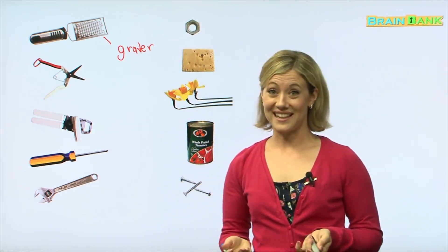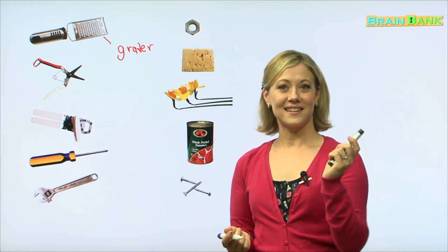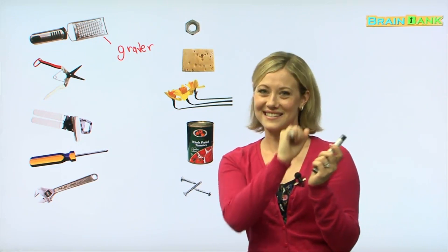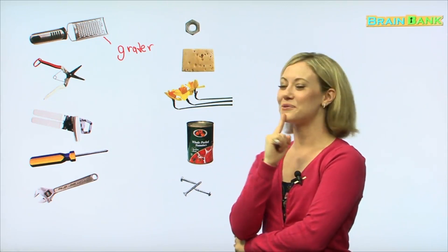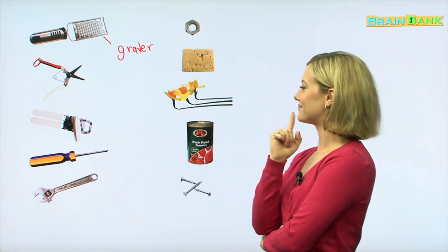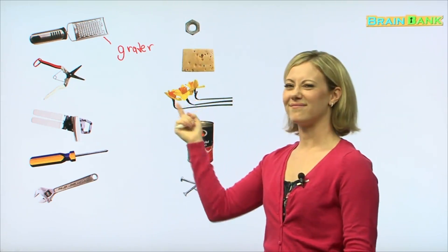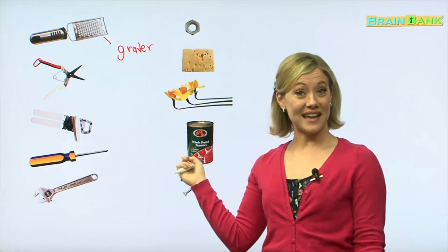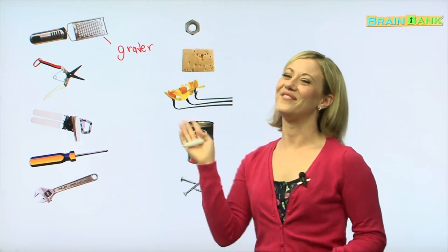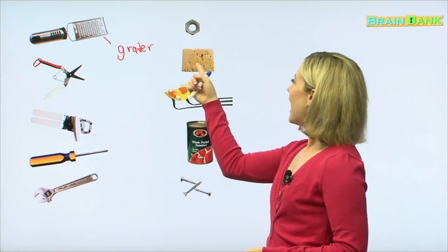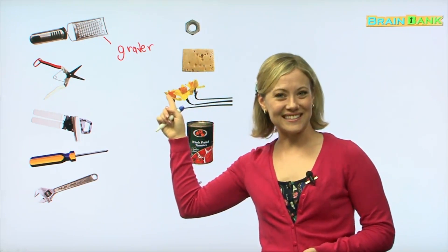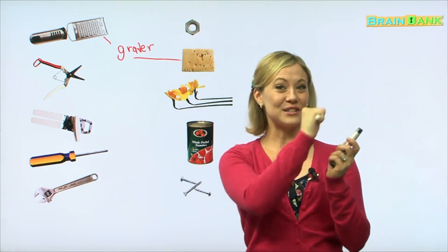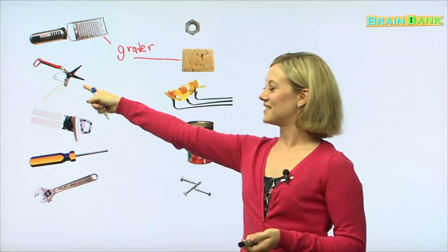So the first one is called a grater. Have you ever seen a grater before? Maybe you've seen your mom use it in the kitchen. You hold it like this and you take something and go like this and it makes small pieces. So what could we use with the grater? Hmm, flowers? No, we don't want to ruin the flowers. Oh, tomatoes, a can of tomatoes? That's food in the kitchen. No, we can't use a grater on a can.